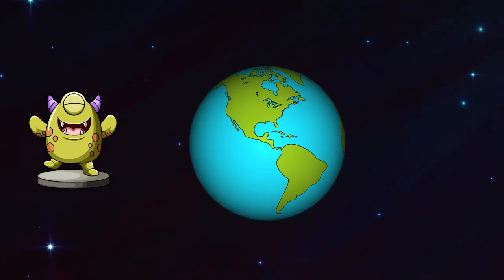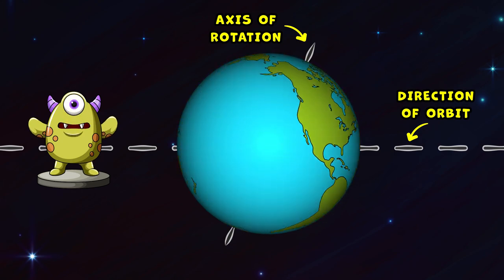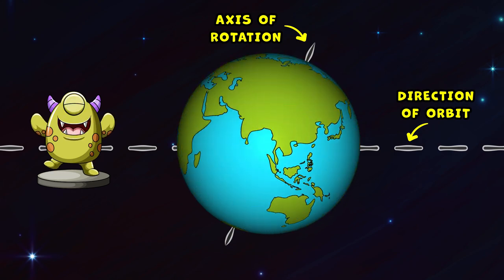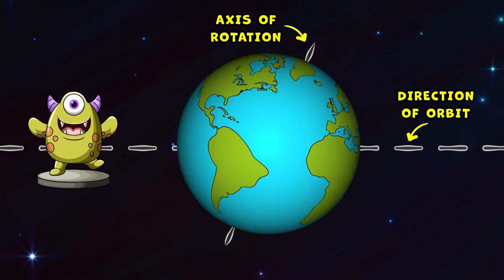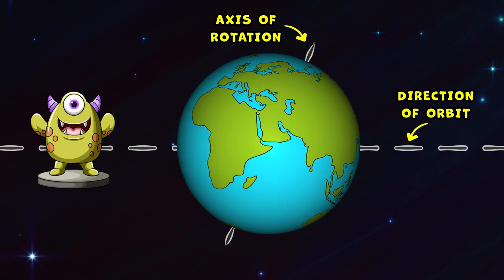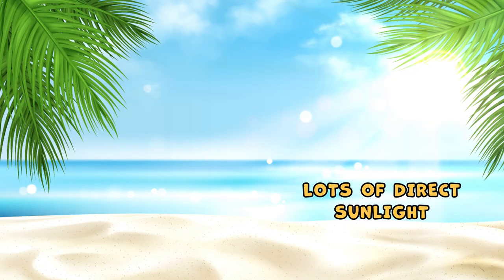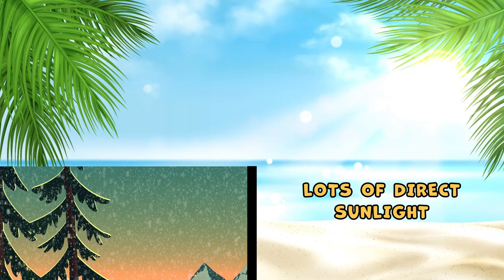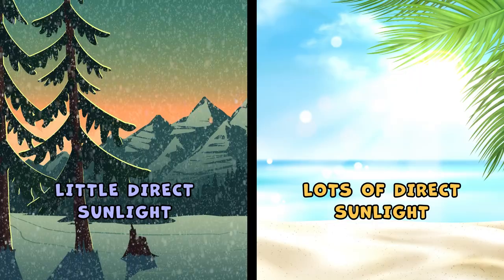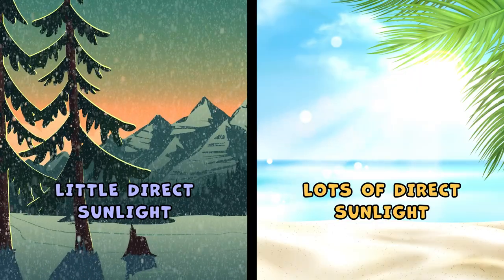Your Earth is tilted! It's true! The Earth's rotational axis is tilted when compared to its orbit, and this means that different parts of the Earth get different amounts of sunlight at any given time.